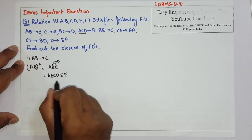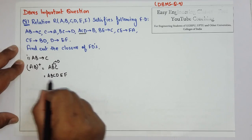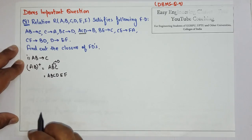So all the six attributes are now covered. So the closure of AB plus is A, B, C, D, E and F.